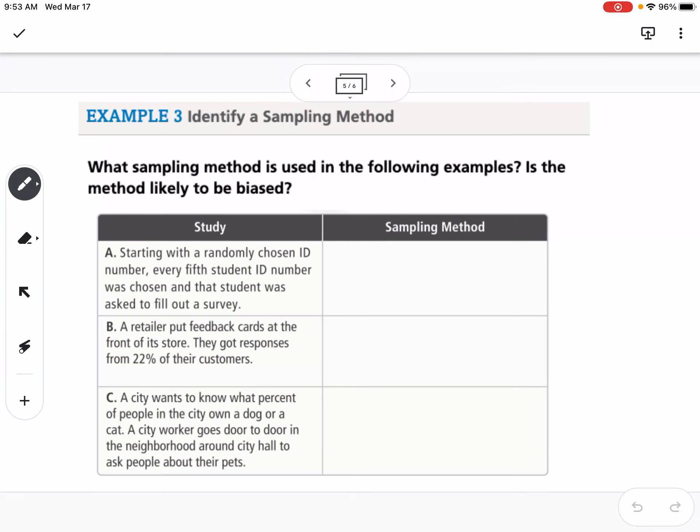We're going to talk about what sampling method is used for the following examples, and is the method likely to be biased. The first one is starting with a randomly chosen ID number. Every fifth student ID number was chosen, and that student was asked to fill out a survey. That would be systematic. And that one would have a low possibility of bias, because there's a system to how they're surveyed, and you're going to probably get an equal representation of all the different views of the students.